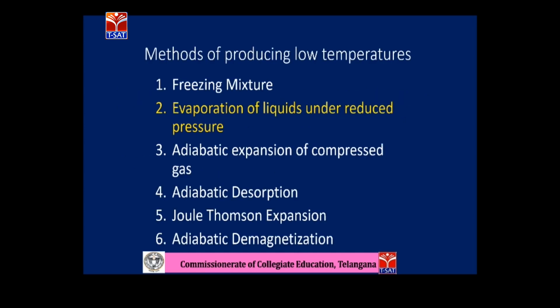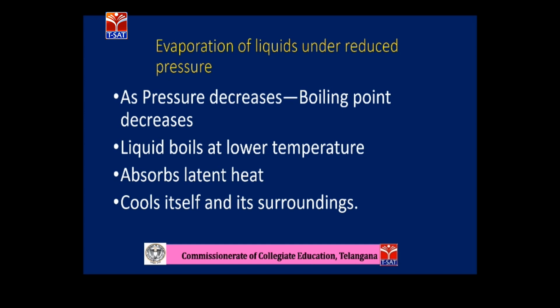The second method is evaporation of liquids under reduced pressure. From the Clausius-Clapeyron equation, as pressure decreases, the boiling point decreases — the liquid boils at a lower temperature than its original boiling point. During this boiling, it absorbs latent heat and cools itself and its surroundings. When pressure decreases, the boiling point decreases and the liquid boils at lower temperatures, absorbing latent heat from itself and its surroundings, thereby cooling.